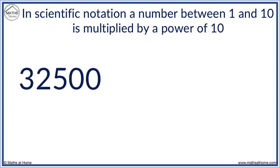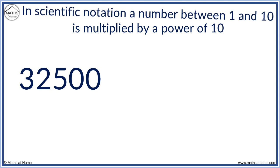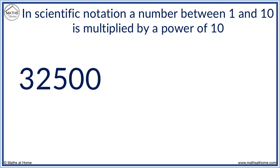For example, we shall write 32,500 in scientific notation. We first write it as a number bigger than 1 but less than 10. To do this, we put a decimal point after the first digit. That is, we take 3, then put a decimal point. We then put the 2 and the 5. We don't put the zeros.